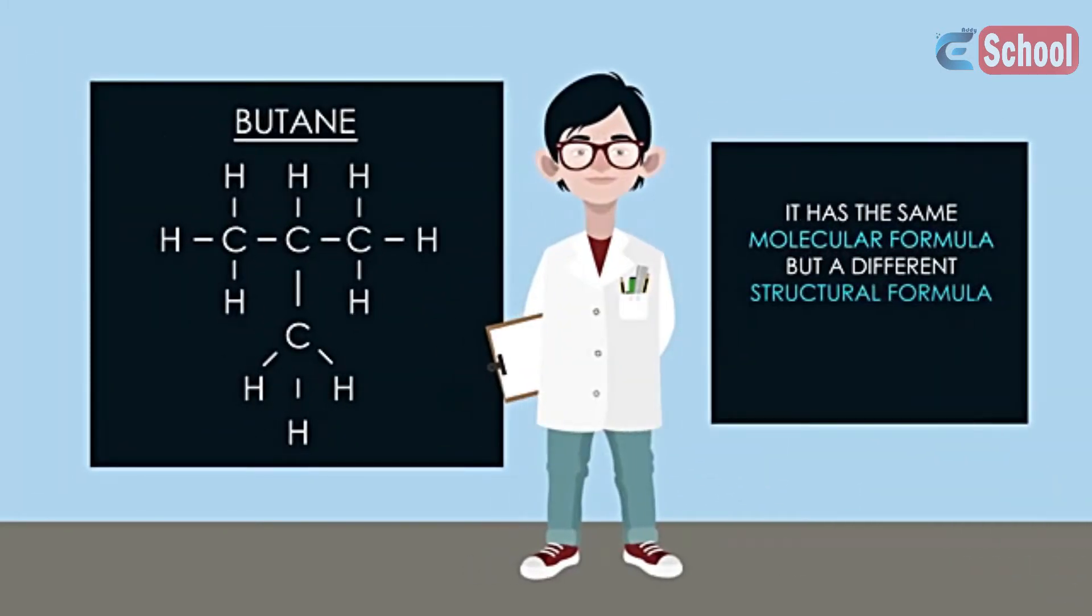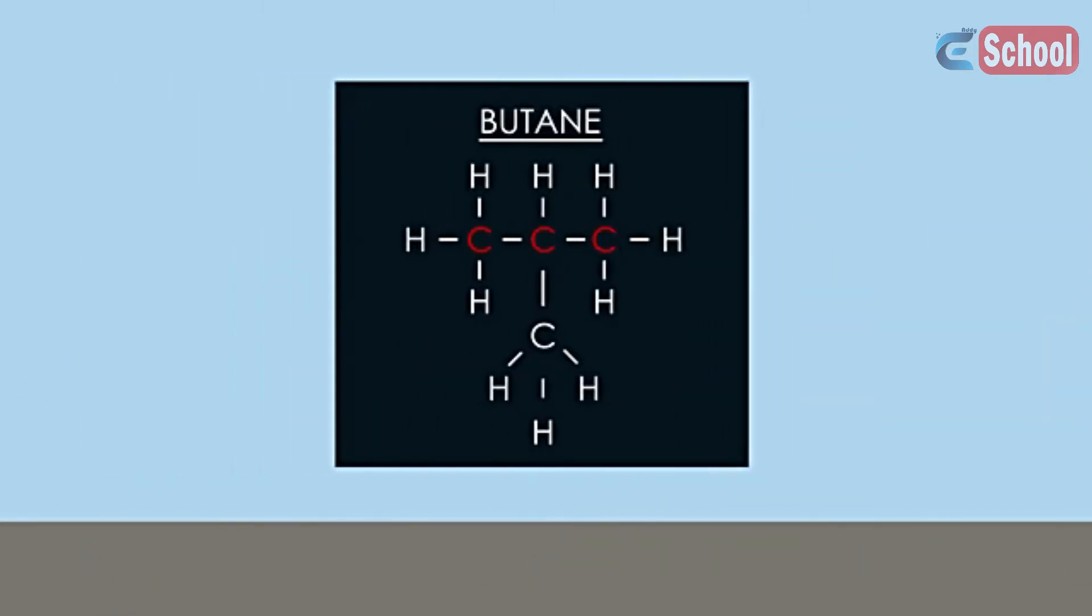It has the same molecular formula but a different structural formula. These two forms of the molecule C4H10 are called structural isomers. The longest chain in this molecule is three carbon atoms long, so we say it is a form of propane.